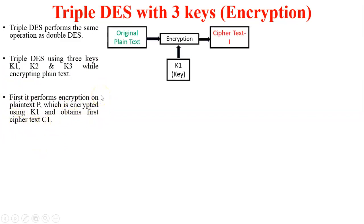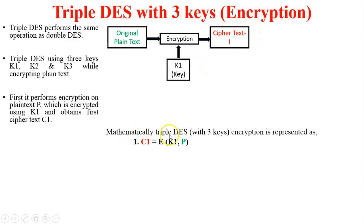In the diagram you can see this is the encryption process. There are two inputs: one is the original plain text and the second is key K1, and it generates ciphertext C1. Mathematically, the first equation is: C1 = E(K1, P), meaning encryption of K1 and plain text P generates C1, or ciphertext one.